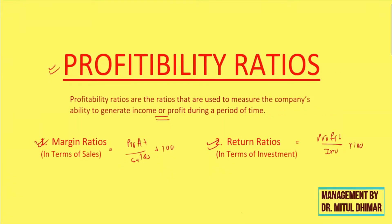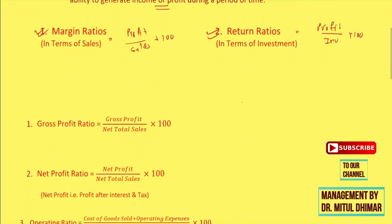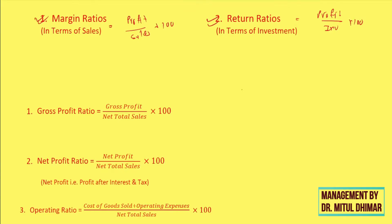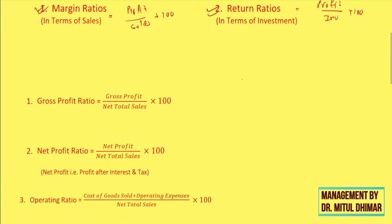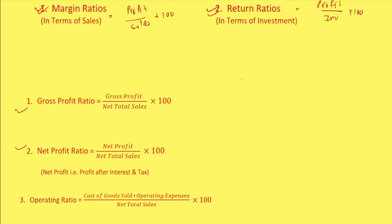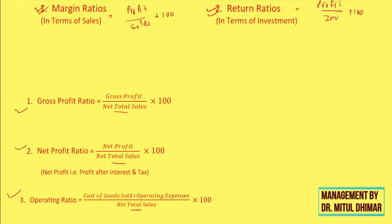Let us begin with margin ratios first. Generally there are three ratios under margin ratios: first is gross profit ratio, second is net profit ratio, and third is operating ratio. As you can see, they all have a common denominator — net total sales. Net means sales after deducting sales returns, and total sales means both cash and credit sales.